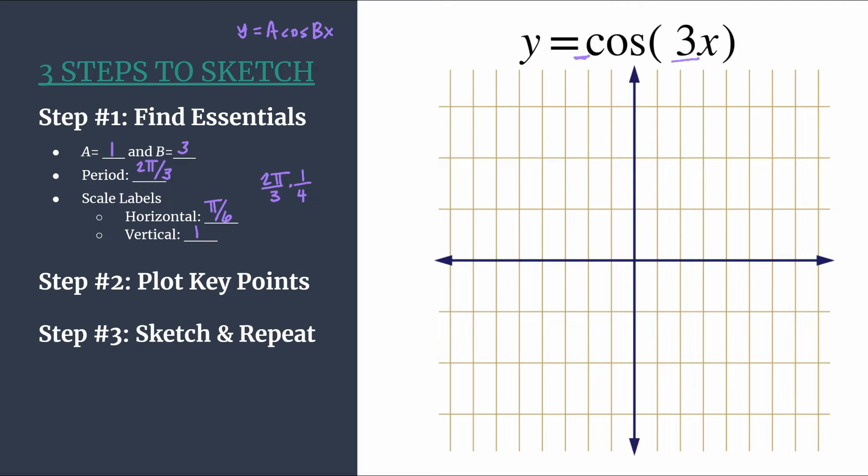Let's label our tick marks. We'll start with the horizontal, counting by π over 6, so we have π over 6, 2π over 6 which reduces to π over 3, 3π over 6 which reduces to π over 2, 4π over 6. Good news here: our fourth tick mark with this method should always match the period, so 2π over 3. It matches, that's great, we're on the right track.